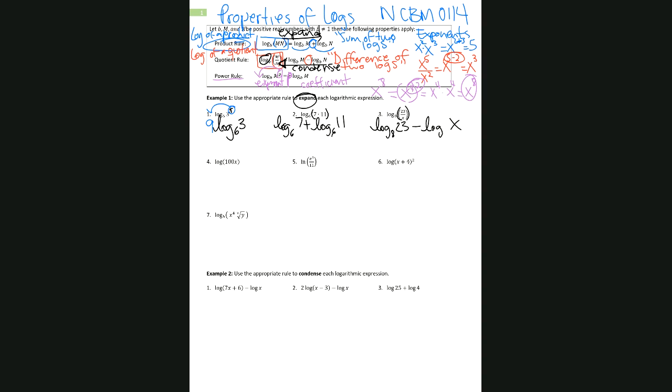How do we know which one will have the negative sign in front of it? That will be whichever variable is in the denominator of the argument of the logarithmic expression. In this case, that's how we know the log of x will be preceded by the negative sign.